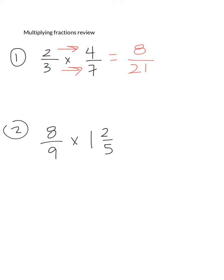Number 2, 8/9 times 1 and 2/5. Pause it, try to work it out. 8/9, we're just going to keep this as 8/9, and we have to change 1 and 2/5 to an improper fraction. So remember 5 times 1 is 5 plus 2 and we get 7/5.